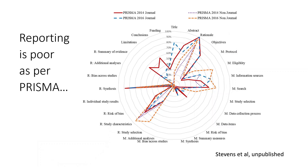Looking at the reporting of rapid reviews against the PRISMA checklist, this radar plot shows for each PRISMA item — reading out to the periphery representing 100% — the proportion of the sample with complete reporting. There are quite a lot of bare areas, meaning many items are not completely reported. This isn't surprising given that rapid reviews tend to be inadequately reported, much like other methodological literature types.